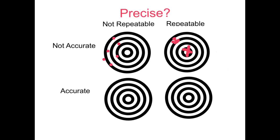Now in the third example, I take six measurements and they land all around there. If I take the average of those six measurements, it's probably pretty close to that bullseye. So in a sense, those measurements are accurate. They're just not really repeatable, because if I were to take a seventh measurement, we don't know whether it's going to land over here or over here.